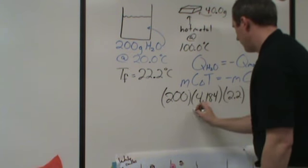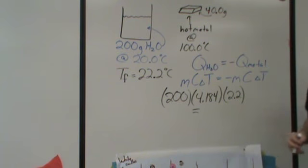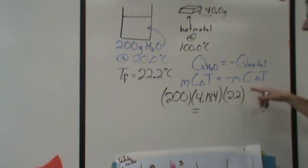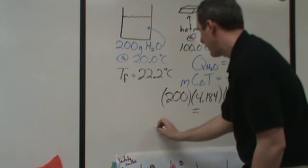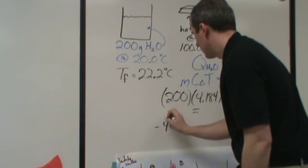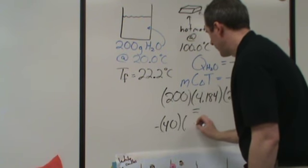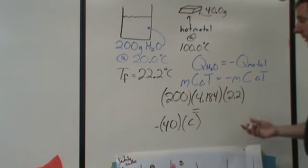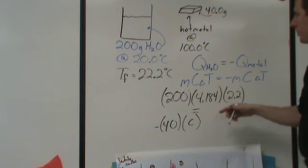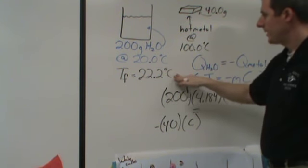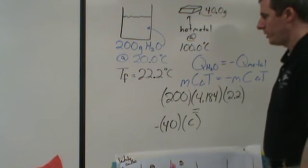That will then be equal to the negative of the mass of the metal, specific heat capacity of the metal, and the temperature change of the metal. If we start looking at the metal, the metal has 40 grams. The specific heat we don't know. So we're going to leave that as C. And then the temperature change, it starts at 100 and it ends at the same temperature as the water, 22.2.